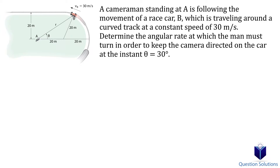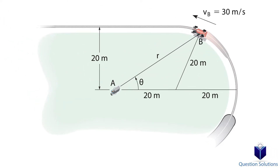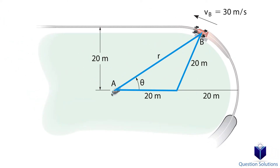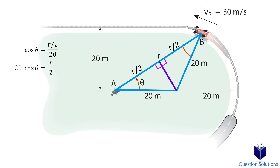Our first step is to figure out an equation for r. We are given an isosceles triangle. To find r, we bisect the longer side in half, which creates two right angle triangles. Since this is an isosceles triangle, the opposite angles are equal. Now that the r length is bisected, each individual length is r over 2. We can use cosine — adjacent over hypotenuse — to write an equation, and isolating for r gives us an equation to determine its length.